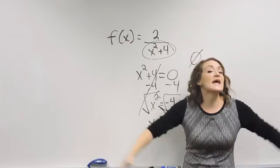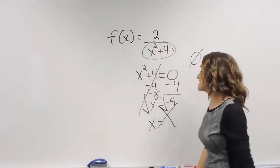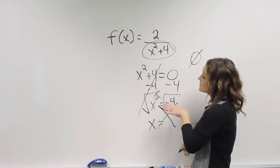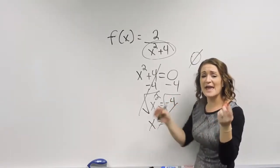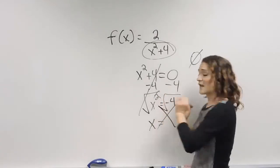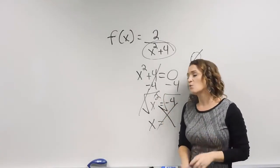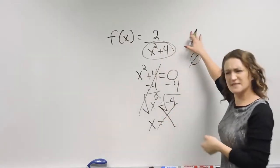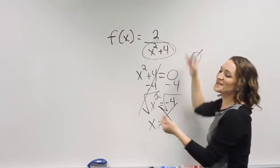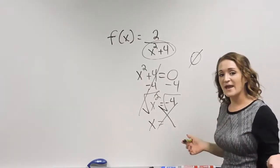So as far as our domain is concerned, our domain is everything. Typically when we solve these problems here, our domain is everything except for those values that make it undefined. Well, we got nothing. So our domain is everything except for nothing. So literally that's everything.